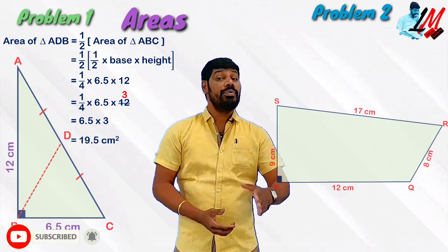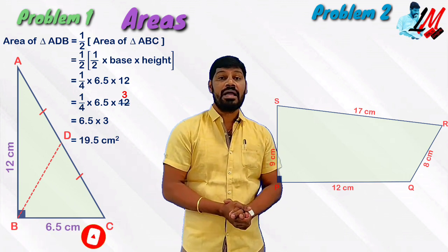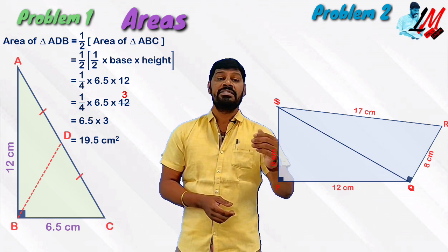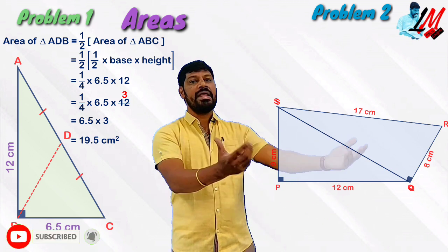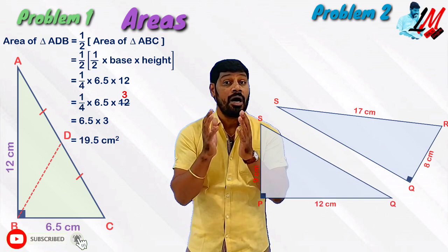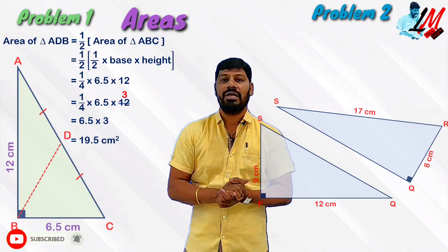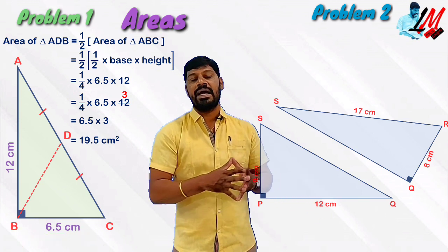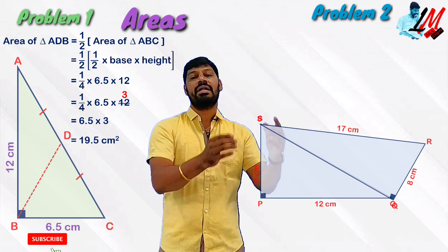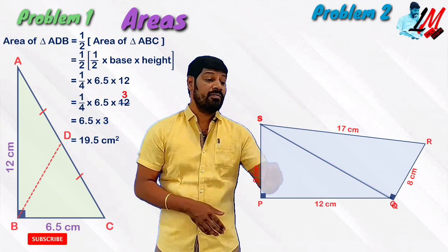The next problem involves quadrilateral PQRS. The quadrilateral is given with angle P = 90 degrees and angle R = 90 degrees. The sides are: 9 cm, 12 cm, 17 cm, and 8 cm. We need to find the area of the entire quadrilateral. Looking at it, the quadrilateral can be divided into two different right triangles. One triangle has sides 9 cm and 12 cm, and we need to calculate the diagonal length QS using Pythagoras theorem.